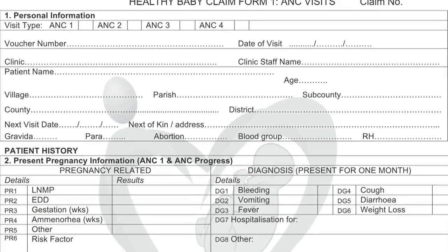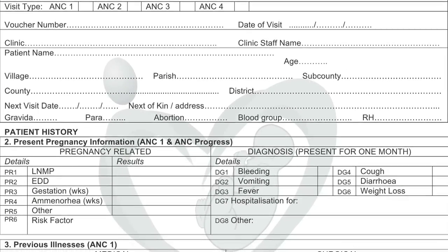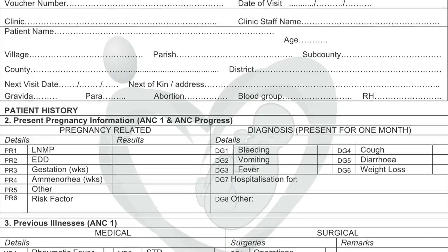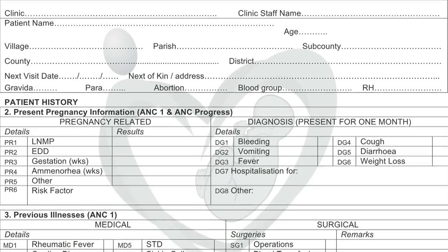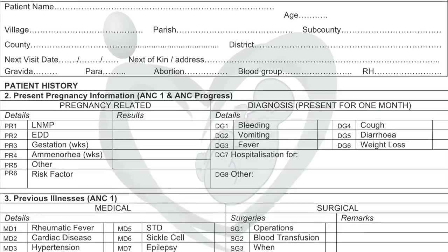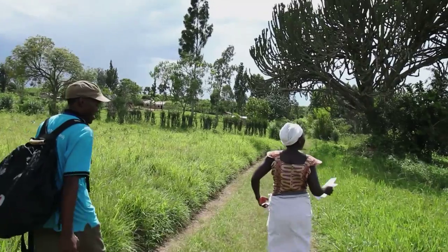The claims data basically tells us about the utilisation of the voucher, because the vouchers are sold, but unless they are utilised and claimed for service, then we don't know what the uptake is like. So claims data gives us a picture of the overall running of this programme, both for Kenya and for Uganda.